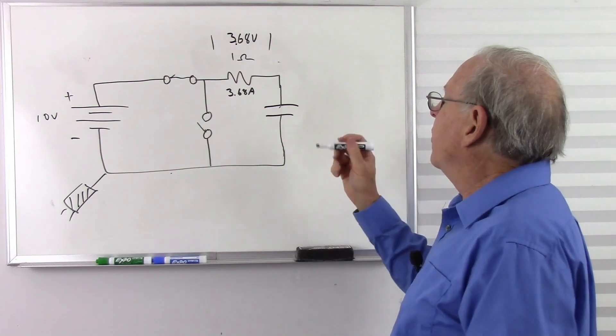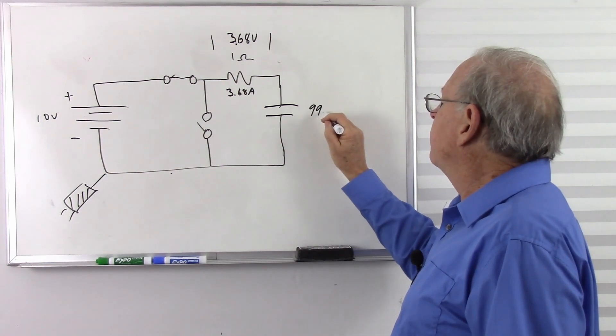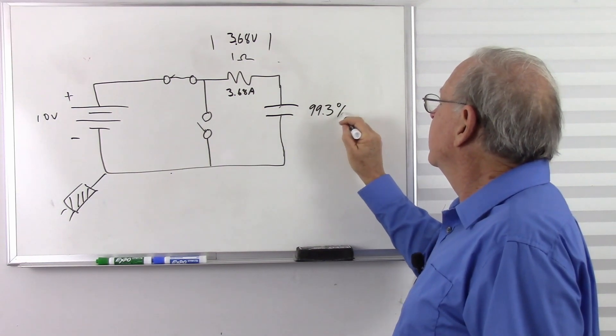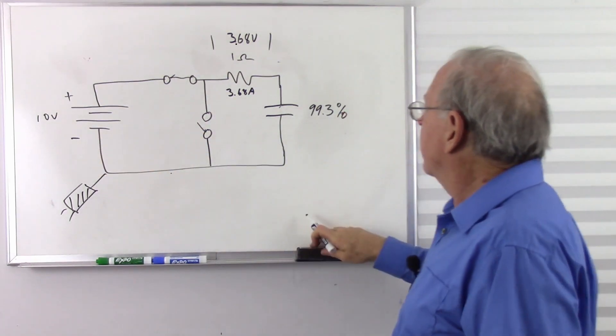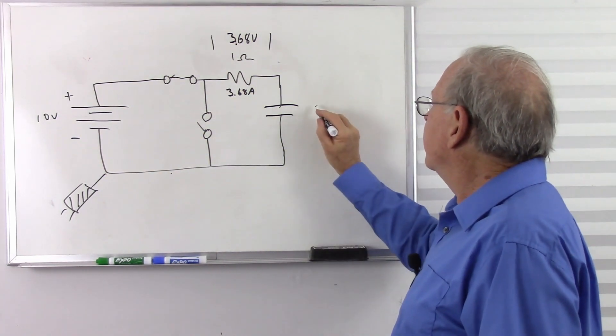After 5 seconds, I'm going to have 99.3% of that voltage. So in the case of 10 volts, I'm going to have 9.93 volts.